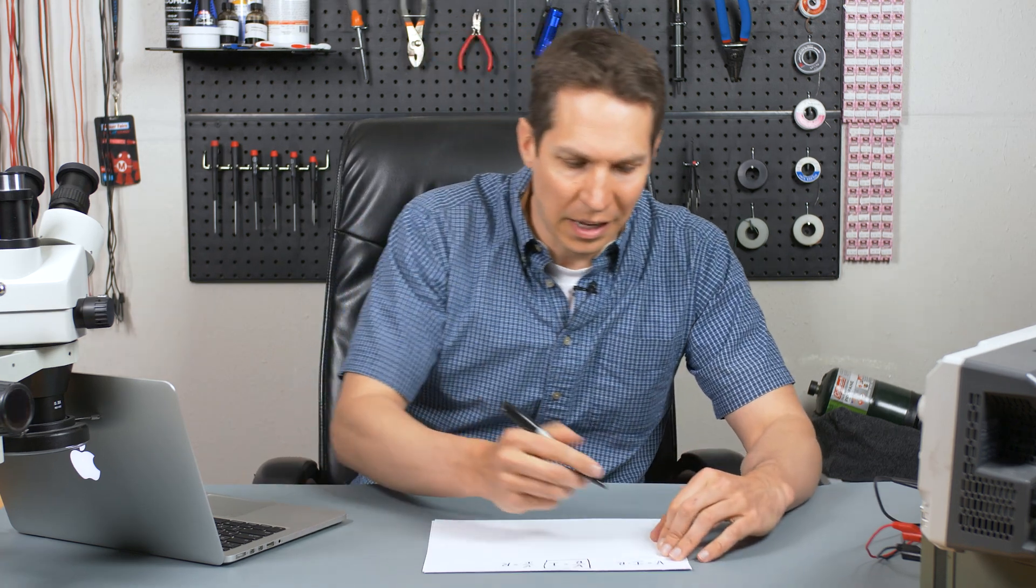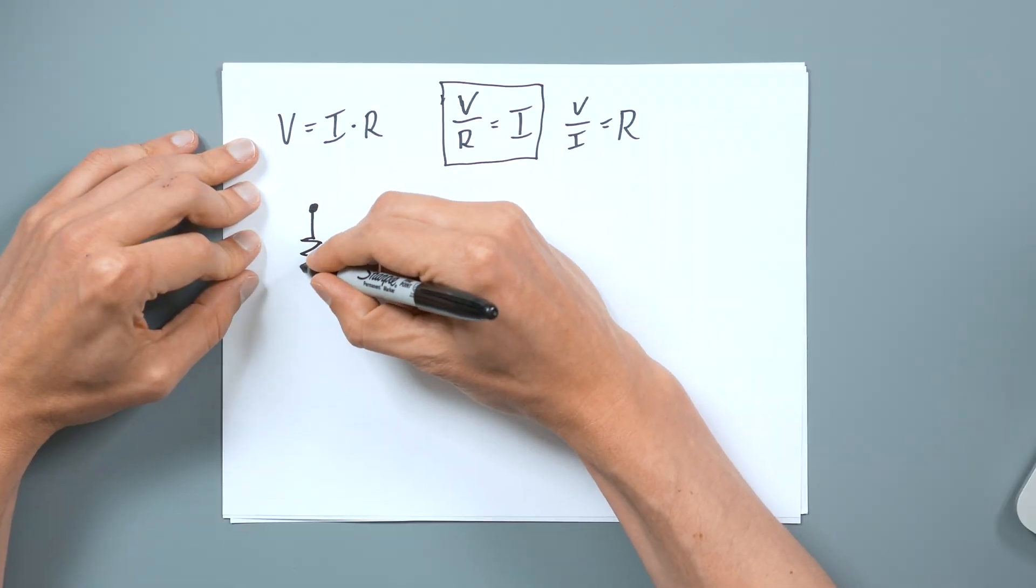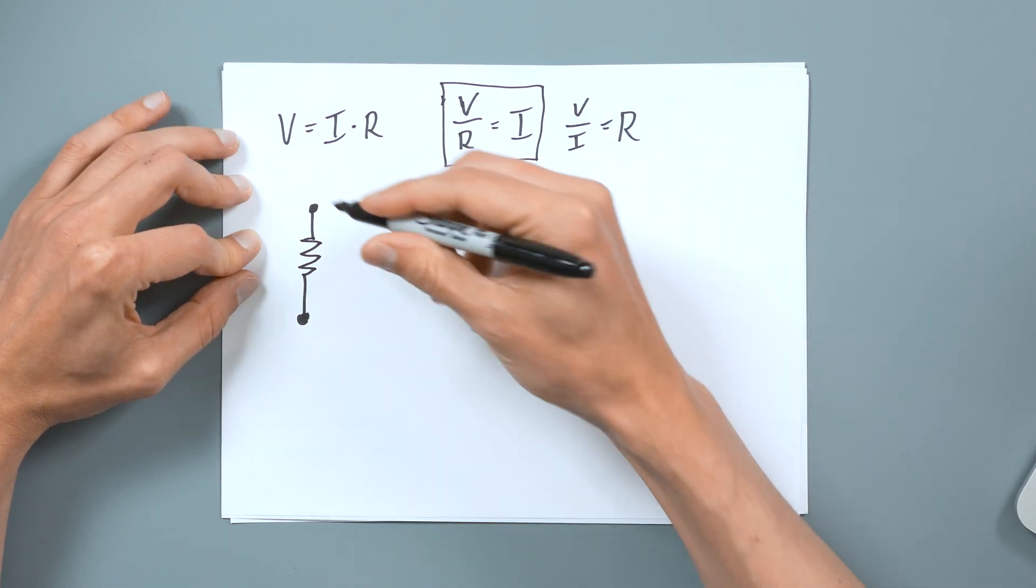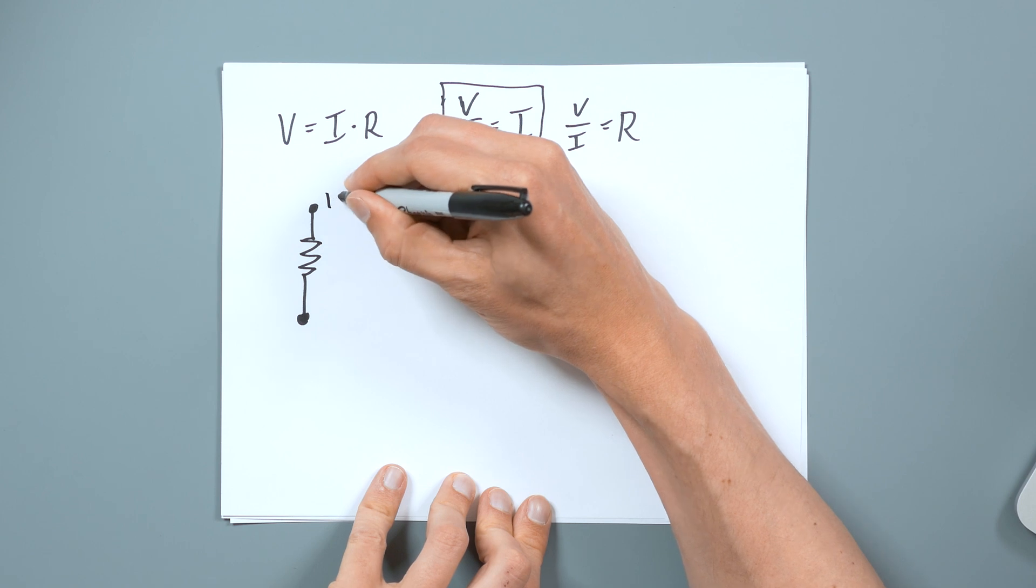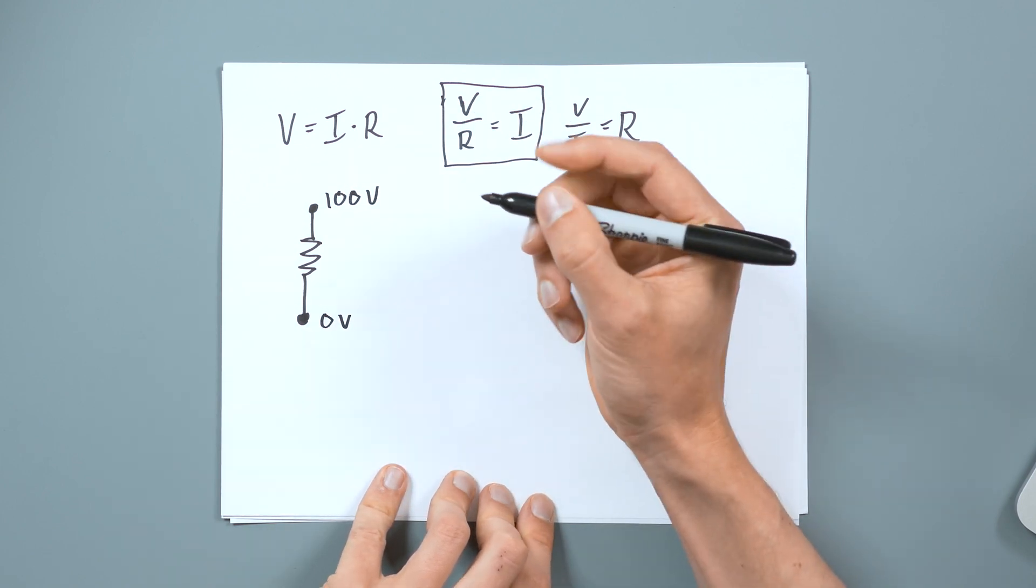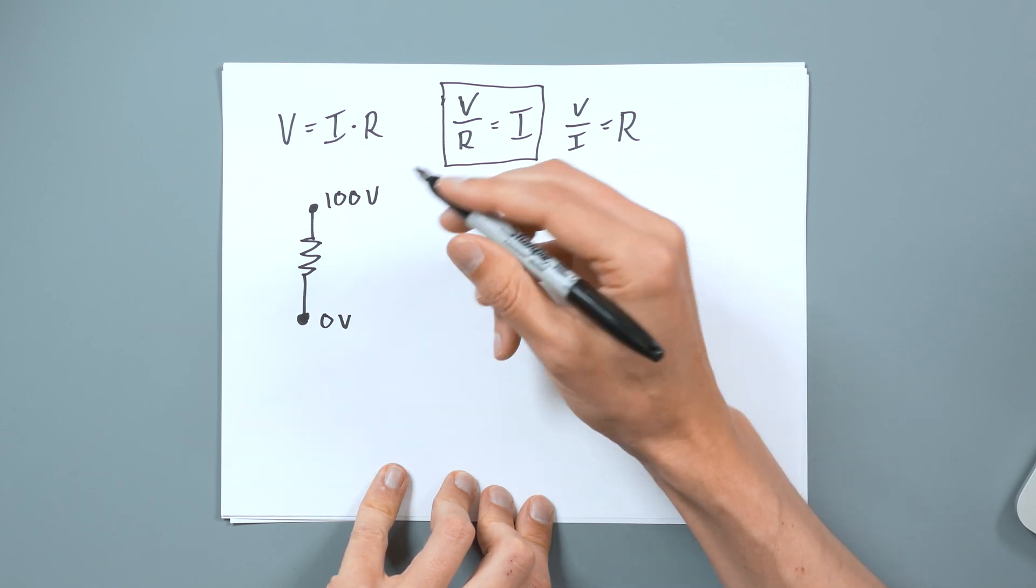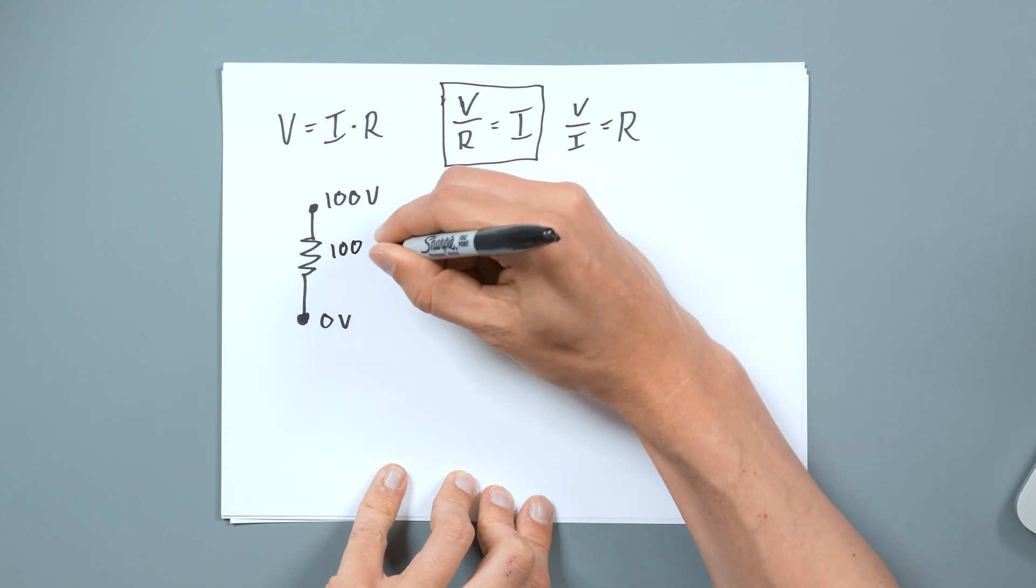So if you are given a circuit, let's just put a node right here, a resistor, and then another node, we already have everything we need to solve something. So let's say this is going to be 100 volts. And this is zero volts. So now we have 100 volts across this resistor. And then let's say this resistor is 100 ohms.